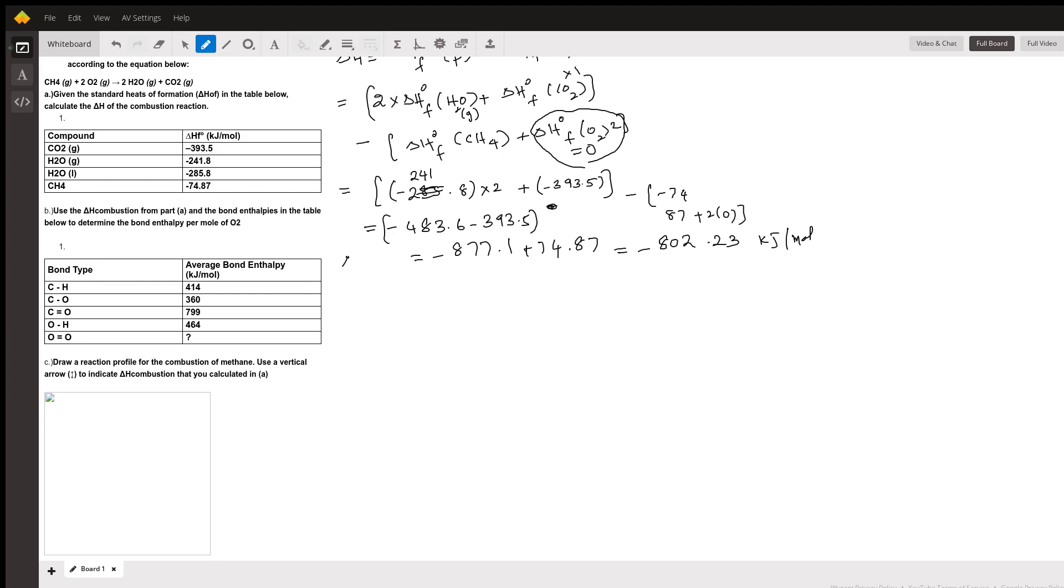So now they want you to calculate the bond enthalpies. So if I write the equation, it's a longer question. They should have given more than five minutes for me. But CH4, you have four carbon hydrogen bonds, plus you have two oxygen oxygen bonds, plus two CO2, plus two H2O.